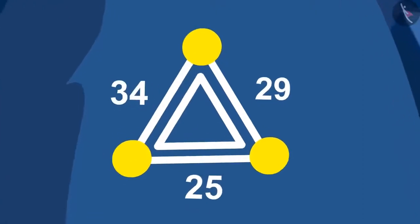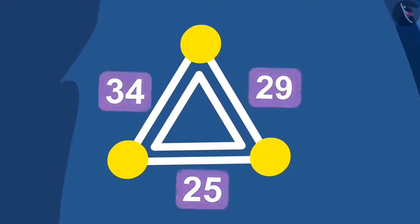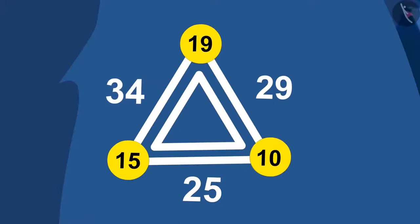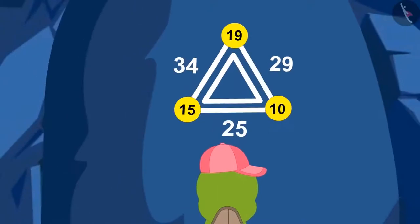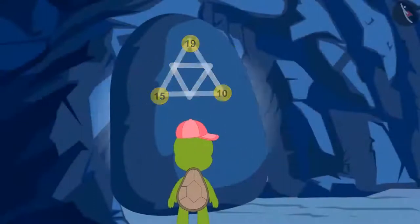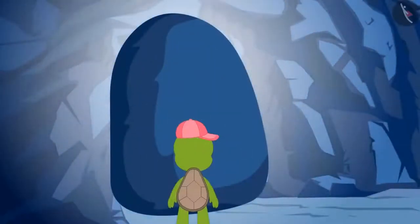Now, Tufan saw the numbers written on the side of the triangle. He noticed that on the side on which the number is 29, he can put the numbers 10 and 19 on two corners. And the side which has the number 34 written, he can put the numbers 19 and 15. In this way, Tufan put all the numbers in their correct places. Tufan's answer was absolutely correct. The first door of the cave opened.